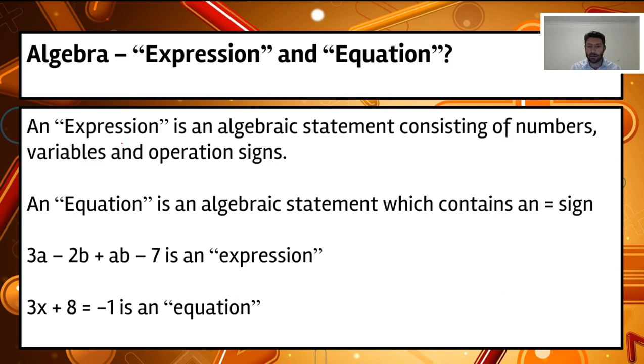An equation is the same thing, it's an algebraic statement, but this one contains an equal sign. So that's the main difference. So we can see the two examples here. We can see this one here, 3a minus 2b plus ab minus 7, that is an expression. It doesn't have an equal sign, but it's got a whole lot of these algebraic numbers and letters. And these are actually called terms and we'll cover that in the next screen, but a whole lot of these terms together.